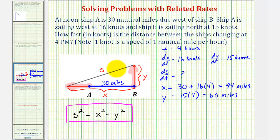But let's also find the length of S when X equals 94, and Y equals 60. So S squared would be equal to 94 squared plus 60 squared.